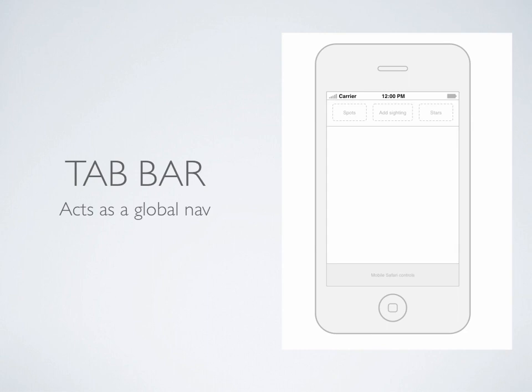Let's think about the global nav, or the tab bar. What features will users need to get to quickly? A button to add a sighting has got to be the most important, as that is what provides us with all of our data. Let's put that up front and center. Part of the requirements was to list sightings by location and by celebrity, so let's jazz up the wording a little and use 'spots' and 'stars'. We'll put those in the left and right positions respectively.